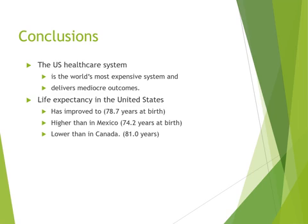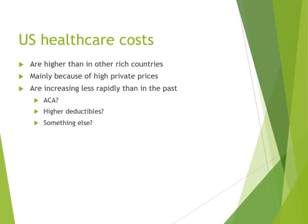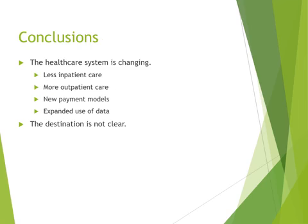In conclusion, the U.S. healthcare system is the world's most expensive system and delivers mediocre outcomes. Life expectancy has improved but remains lower than Canada, though higher than Mexico. U.S. healthcare costs are higher than other rich countries mainly because of high private pricing, and are increasing less rapidly now due in part to the Affordable Care Act and high deductibles. The healthcare system is changing — less inpatient care, more outpatient care, new payment model systems, and expanded use of data. We need to get from mediocre to excellent, and that is the primary goal for every healthcare organization and health economist: to identify where we are lacking and bring superior care to our patients.